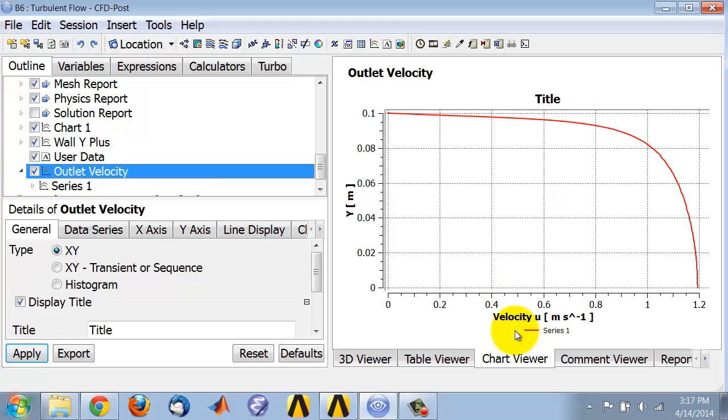I want to non-dimensionalize this by dividing it by the diameter of the pipe, and I want to non-dimensionalize this by dividing it by the average velocity at a cross section.